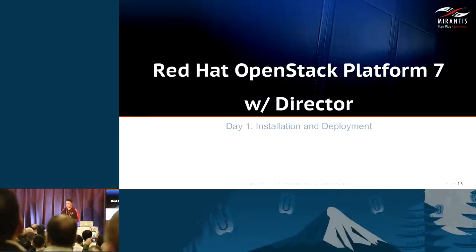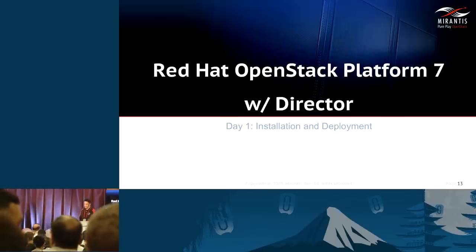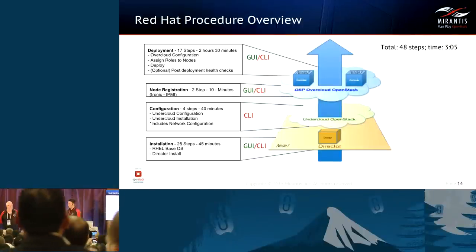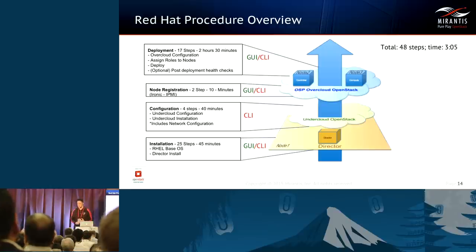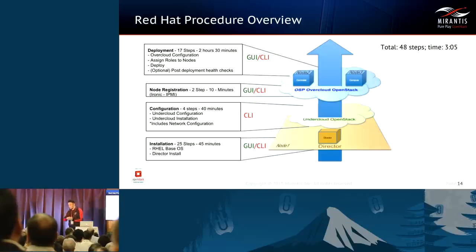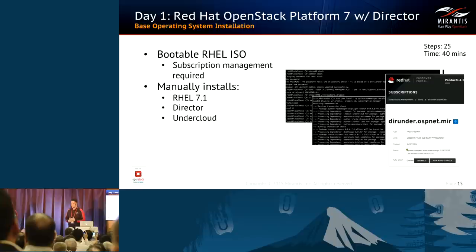Now I'll talk about our experiences deploying Red Hat's OpenStack Platform 7 using Director. From the ground up, the process is: install the base OS, do subscription management, install Director, configure the undercloud, which then configures and deploys the overcloud, discover nodes, and physically deploy. The first section is obtaining the bootable ISO, mounting it, and launching into the Red Hat Enterprise Linux operating system, which requires a subscription to the appropriate repositories.